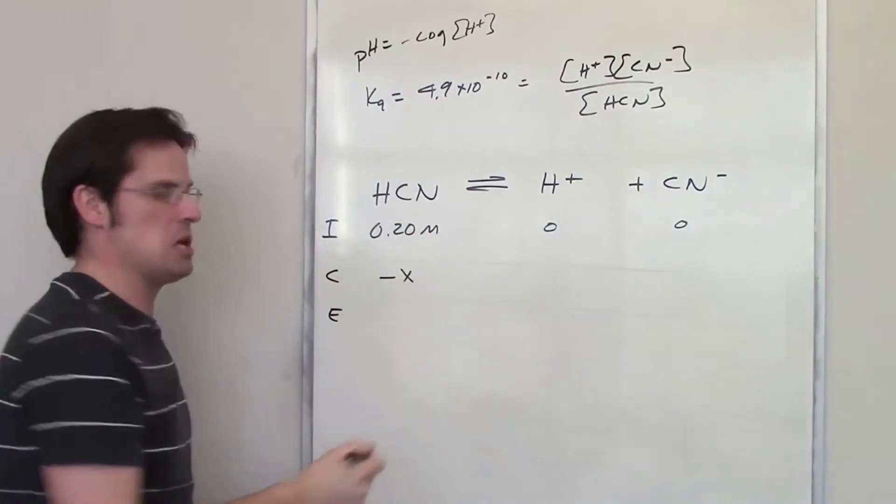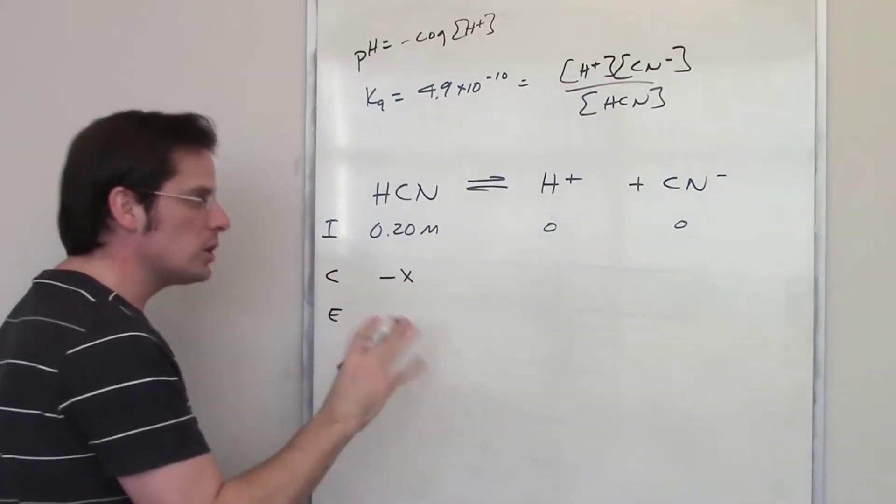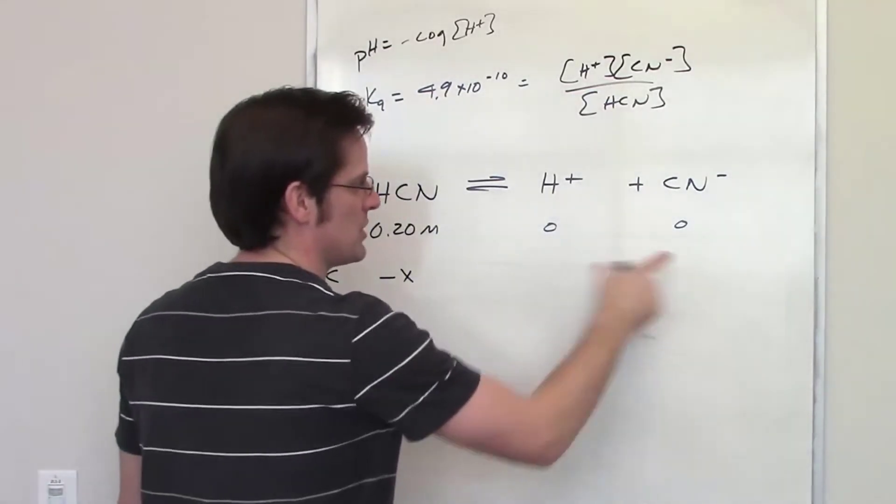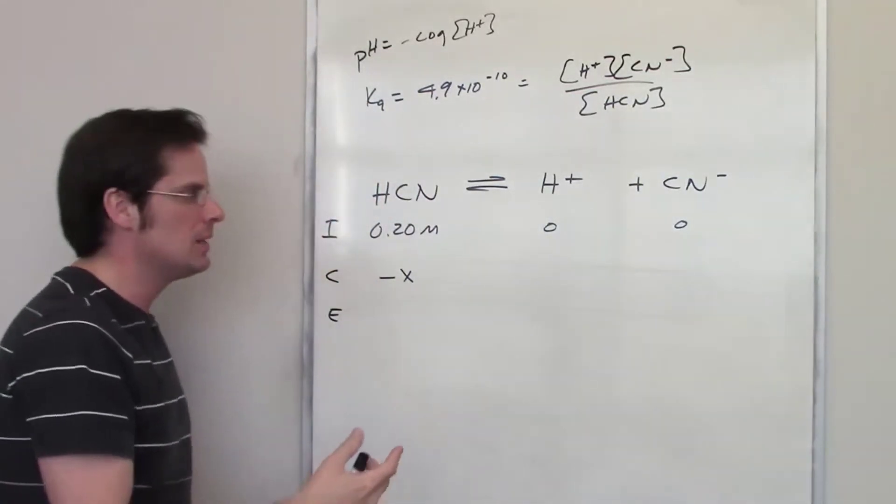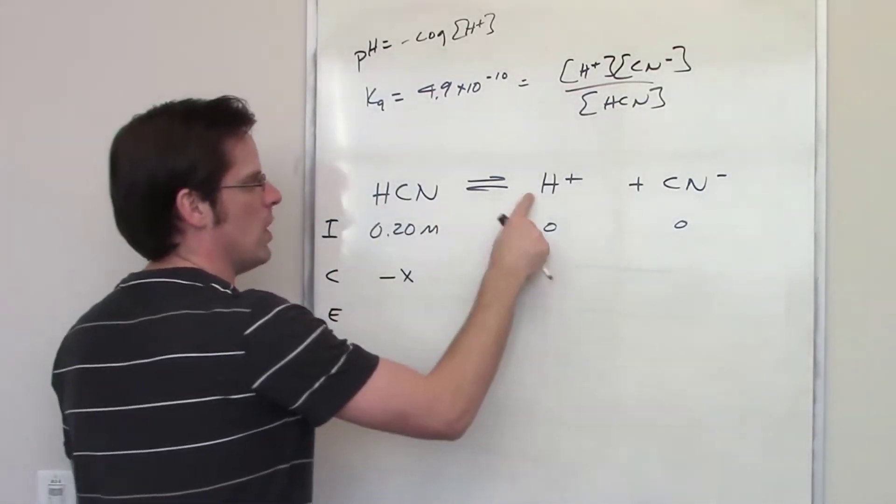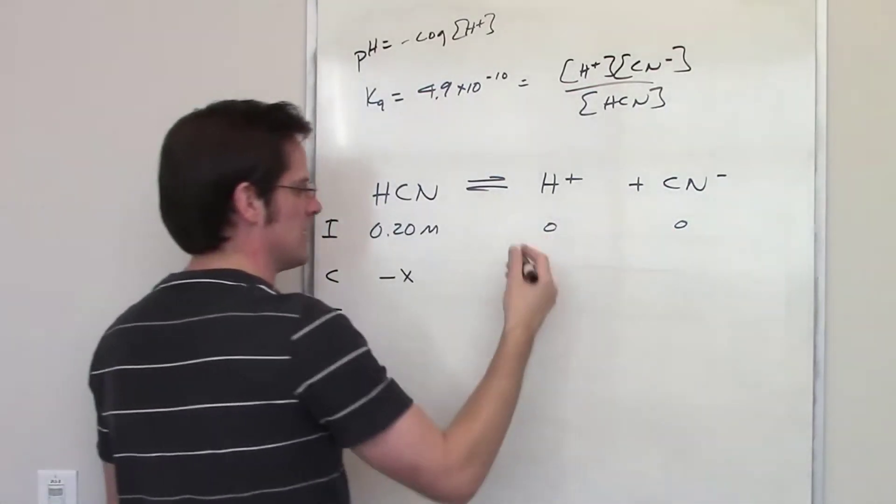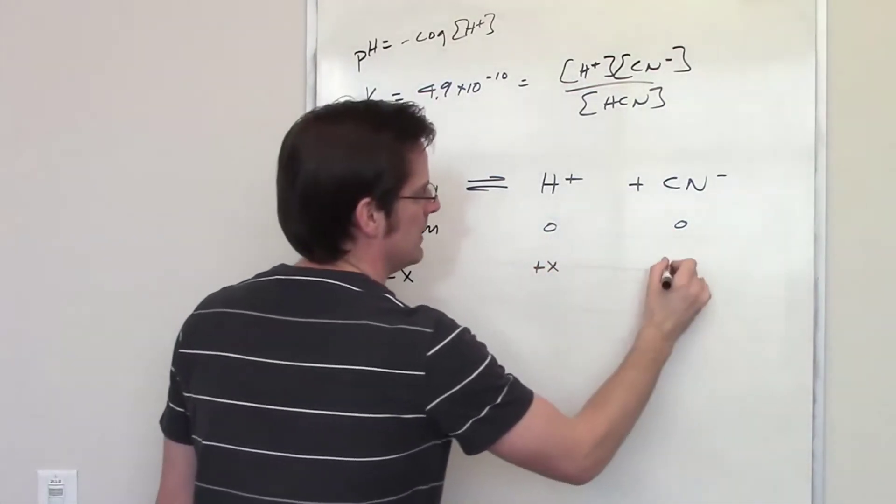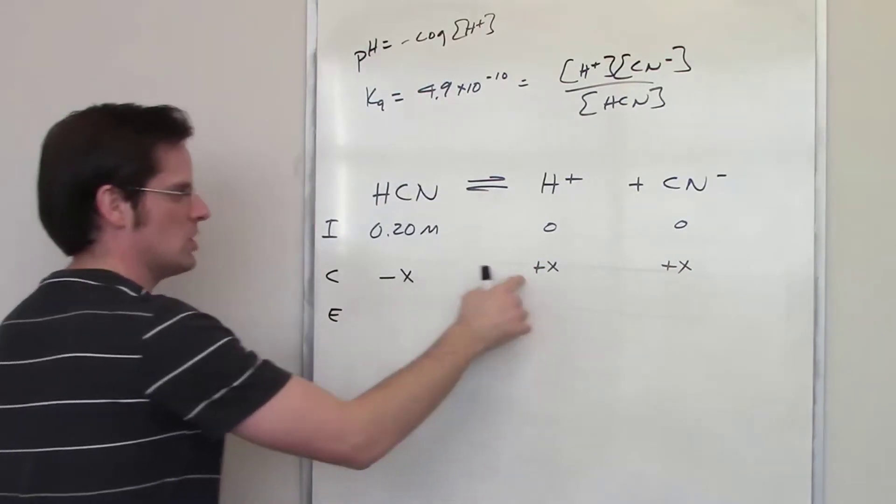The concentration of this goes down by an amount X. Now proportionally speaking, by what amounts will the concentrations of each of these go up? Well because it's present in a one to one to one ratio, each of these concentrations also has to go up by X. One to one to one.